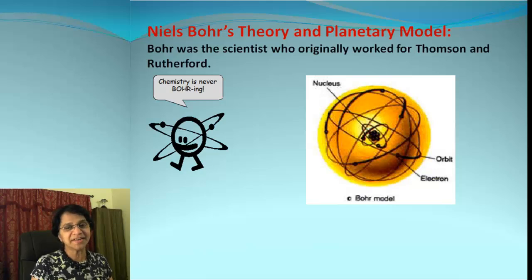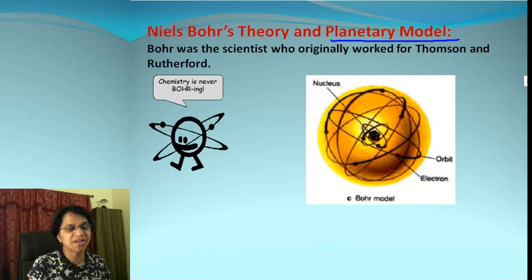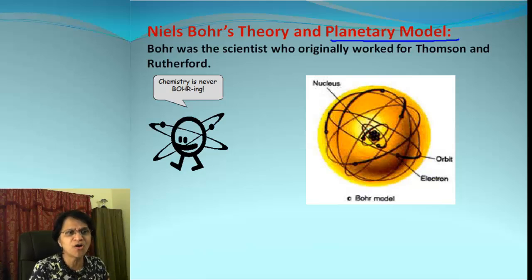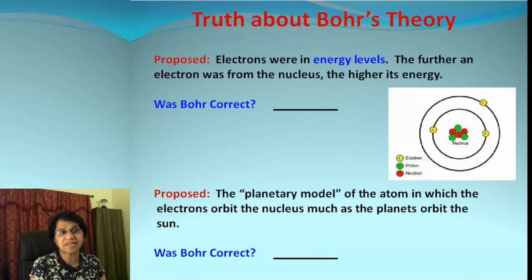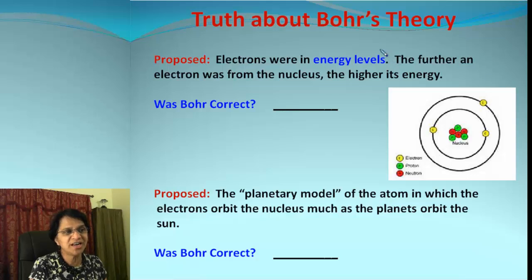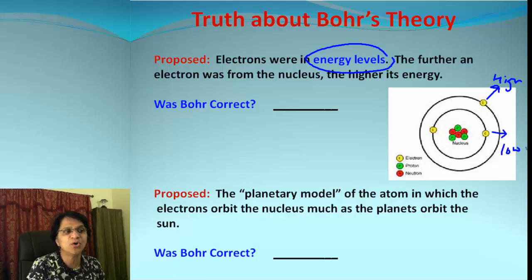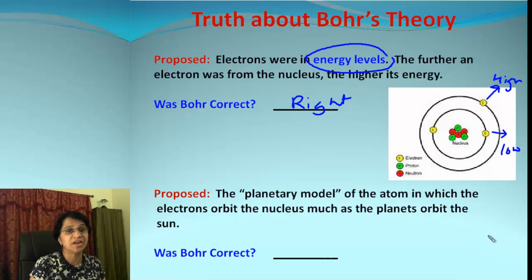Soon Niels Bohr came in and things changed. He proposed a planetary model — Bohr was actually a scientist who had worked with Thomson and Rutherford. In Bohr's model, the nucleus is at the center, well-defined, with electrons orbiting around it. This model was considered valid for a long time. Bohr proposed that electrons have energy levels, and the farther an electron is from the nucleus, the higher its energy — and he was absolutely correct about that.